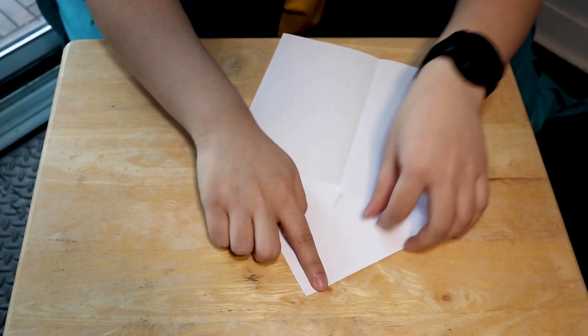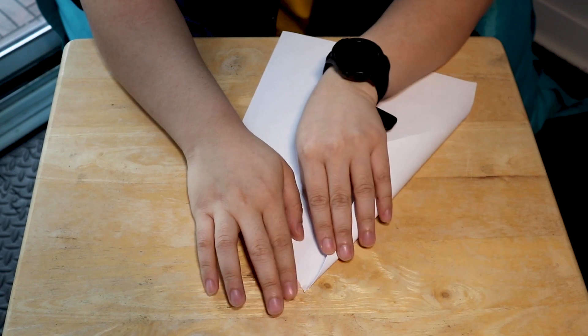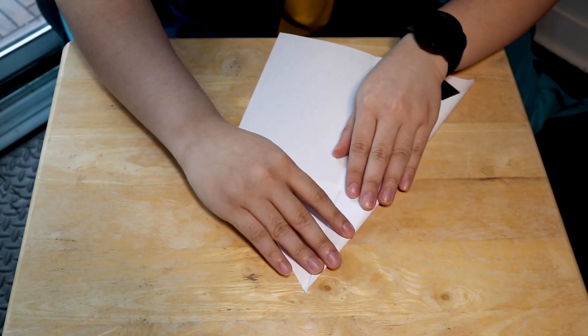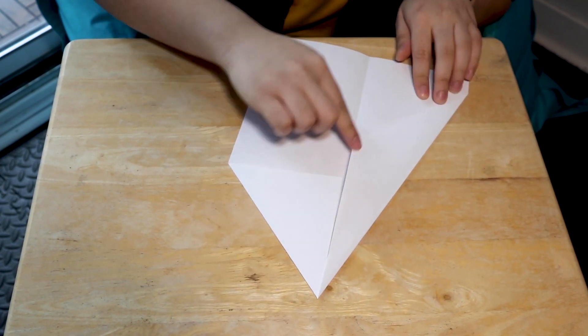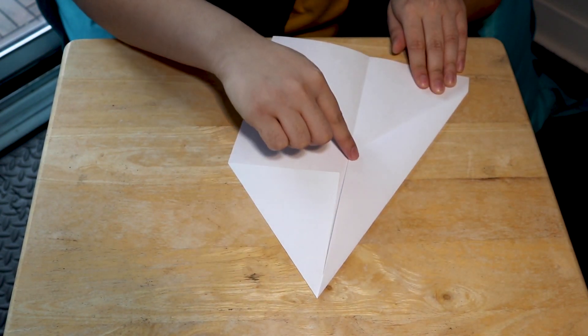Then we're gonna fold this long part again so it meets the middle crease. Like that. Ooh! Hey look! We have another triangle right over here.